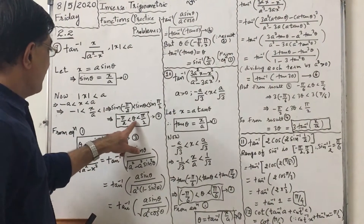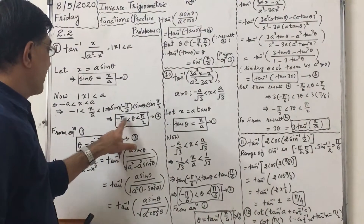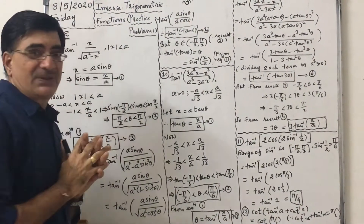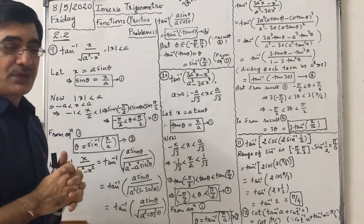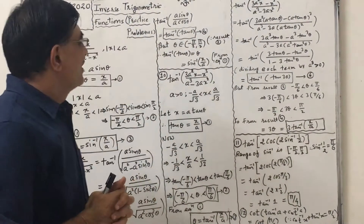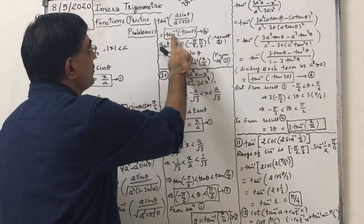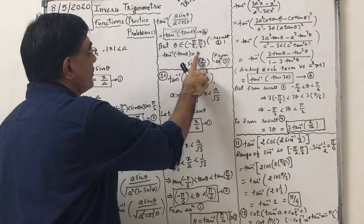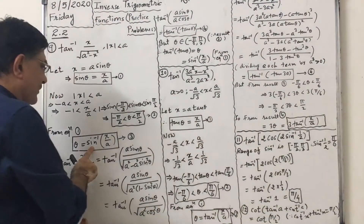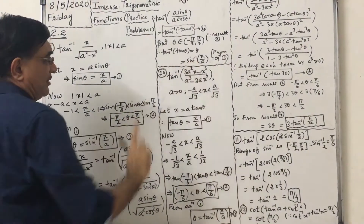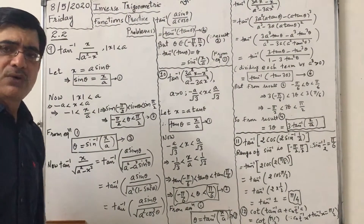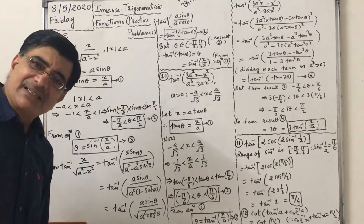We know that θ is between minus π/2 and π/2, in an open interval, so θ is in the range of tan⁻¹ also. So we can write tan⁻¹(tan θ) = θ. But θ was equal to sin⁻¹(x/a), so the simplified form is sin⁻¹(x/a).